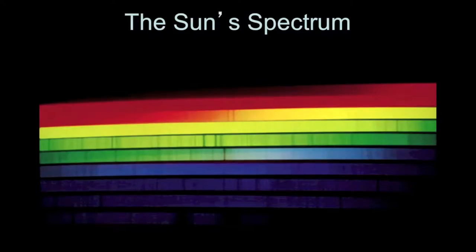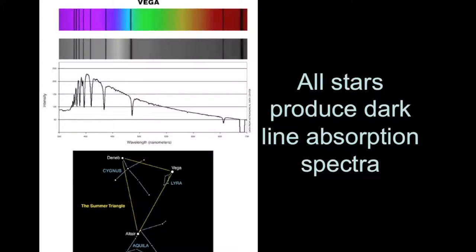Here's what the sun's spectrum looks like. We actually have it broken up into different rows here. But you can see that throughout the spectrum there are dark lines. And that's because the sun has an absorption spectrum. And it turns out that all stars produce these dark line absorption spectra.